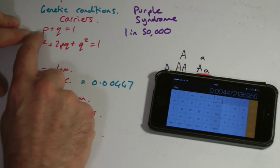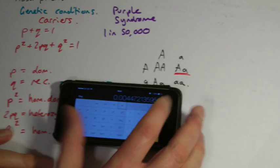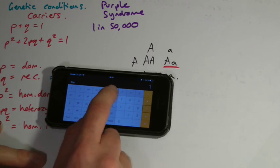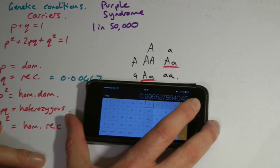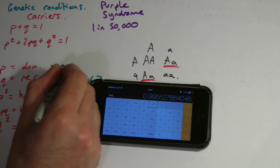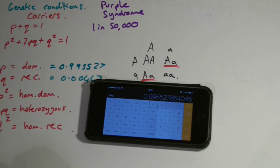Once I know what q is, if p plus q is 1, 1 minus q must be p. So I go 1 minus, and that was my q value. And there's my p value, 0.99557 and so on.